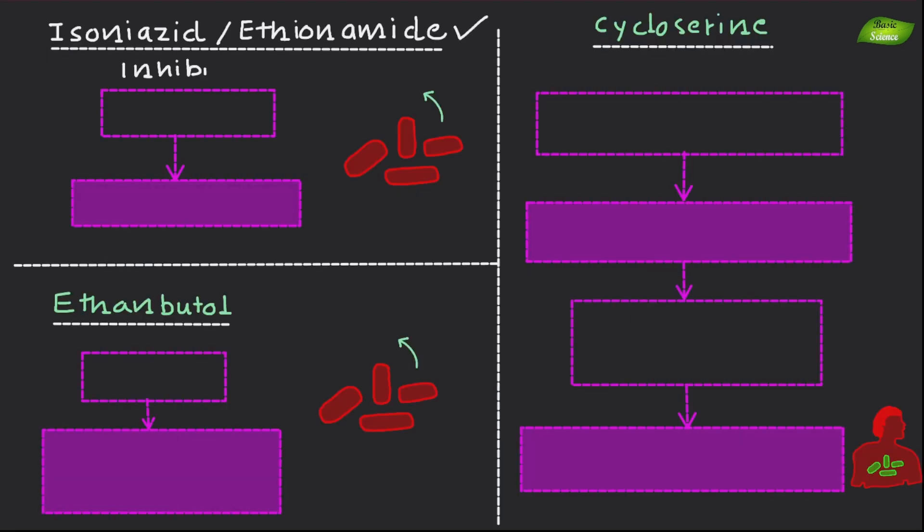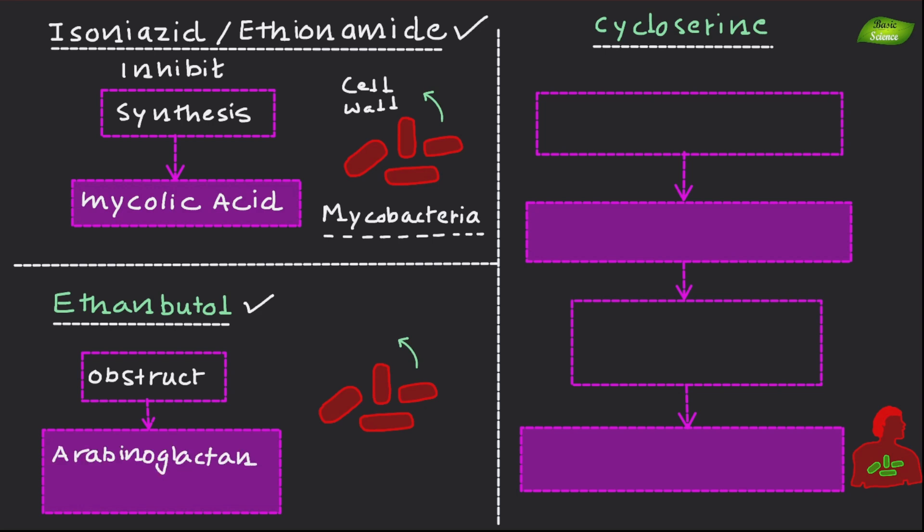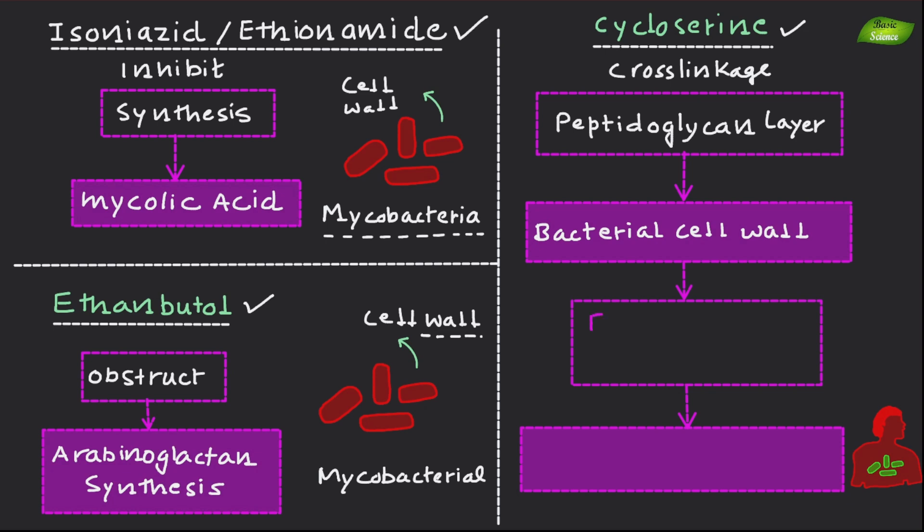Additionally, antibiotics like isoniazid and ethionamide inhibit the synthesis of mycolic acid, which is a key component of cell wall in mycobacteria. Ethambutol obstructs arabinogalactan synthesis, which is an essential component of the mycobacterial cell wall. Finally, cycloserine prevents the cross-linkage of peptidoglycan layers, further compromising the structural integrity of bacterial cell walls. These various mechanisms collectively contribute to the effectiveness of antibiotics in combating bacterial infections.